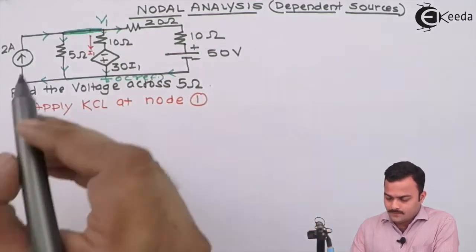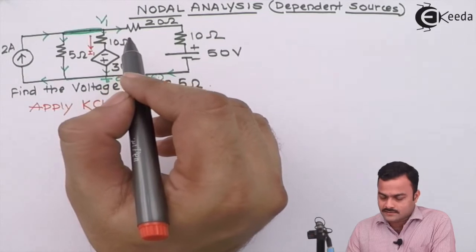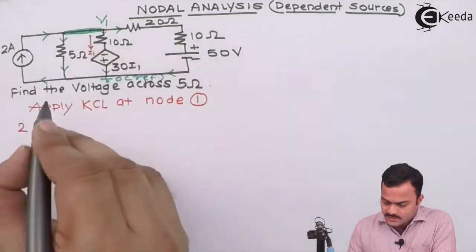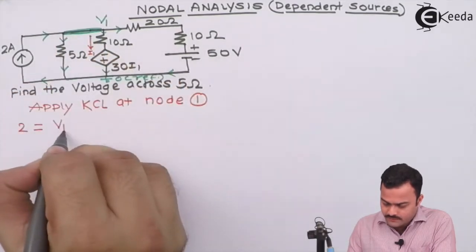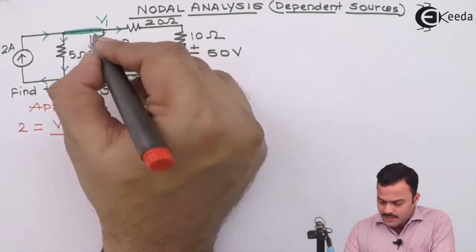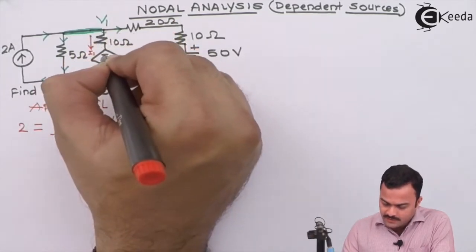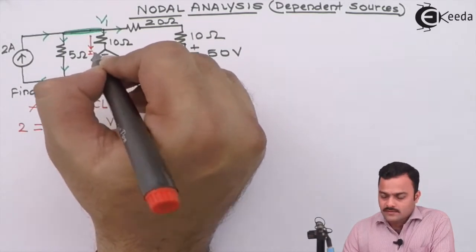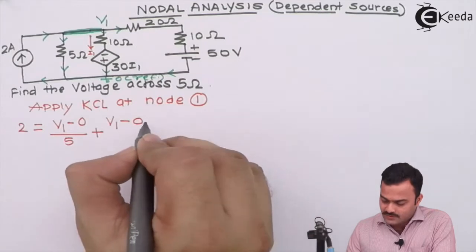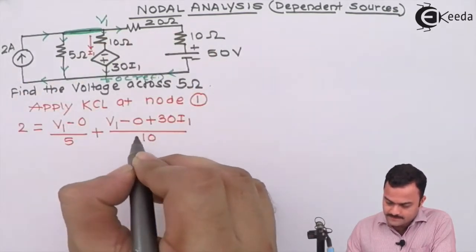We are applying KCL at node 1. We have four branches meeting at node 1. Out of that, one is the incoming and remaining three we have considered as outgoing. So incoming current is 2 ampere. 2 equals all these outgoing currents: V1 minus 0 divided by 5, plus this branch current starting at V1 ending on reference, and in the current direction we are having a voltage changing its polarity minus to plus. In the current direction, if it is minus to plus, that means voltage rise, and voltage rise is always represented with a positive sign.